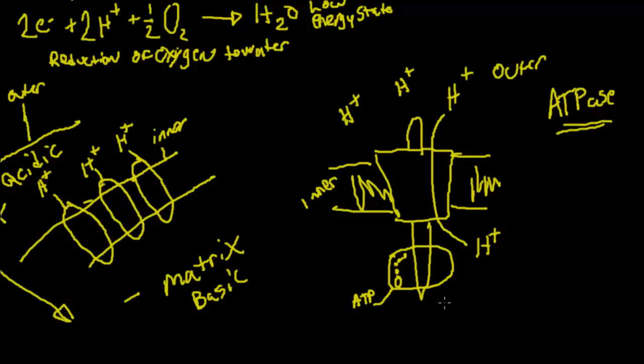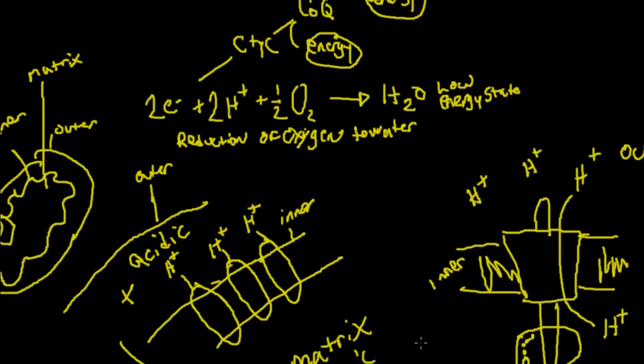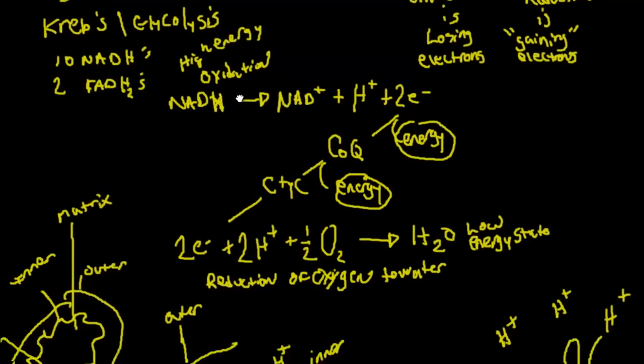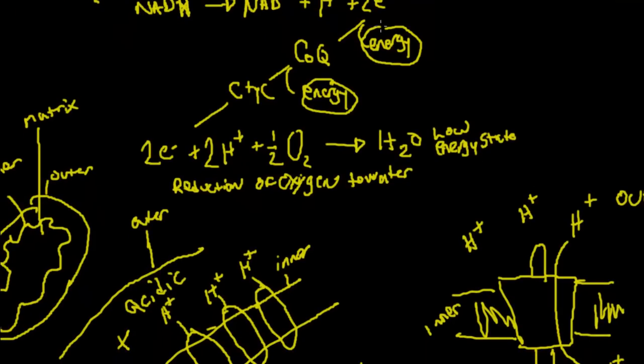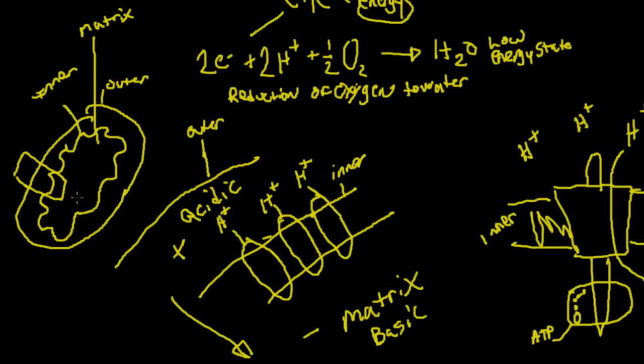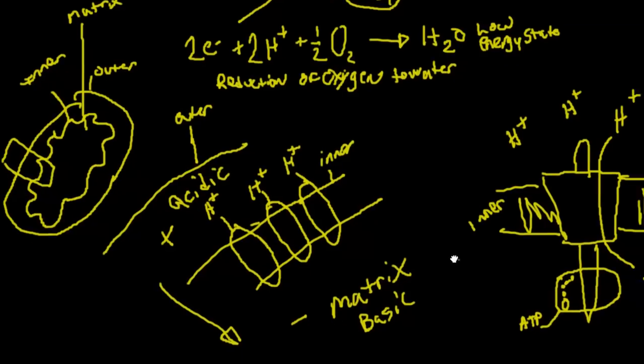So that's how NADH helps create ATP indirectly. So let's go back over this real quick so that we can have it make sense. We started off with our NADHs or FADHs. And then we're going to oxidize NADH from a high energy state to a low energy state. That's going to produce energy. That energy is used in the mitochondria, which are the powerhouses of the cell, to pump these hydrogens across.